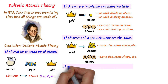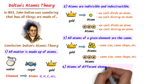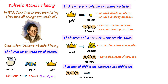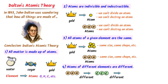Fourthly, atoms of different elements are different. For example, the atoms of hydrogen are totally different from carbon, while atoms of carbon are totally different from oxygen. Just like one dollar is totally different from one rupee.